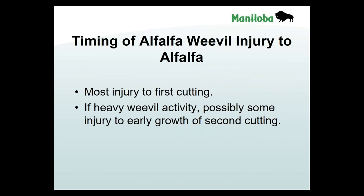Alfalfa weevil injury is mainly a first-cut issue for hay growers. The larval stage is usually present throughout June and into early July. This year has been cooler than normal so the larval stage may persist to about mid-July, but by around the 14th or 15th they should mainly be pupating. The adult feeding is really inconsequential — it's that June and early July larval feeding you need to be concerned about.